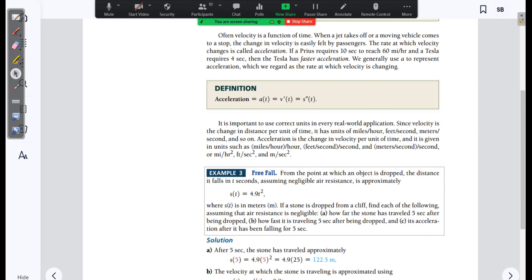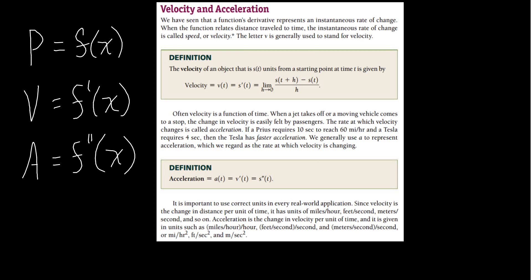It is important to use correct units in every real world application. Since velocity is the change in distance per unit of time, it has units like miles per hour, feet per second, or meters per second. The second derivative — acceleration — is the change of velocity per unit of time, given in units like miles per hour per hour, feet per second per second, or meters per second squared.